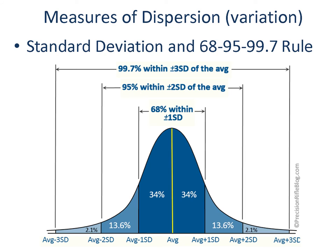Standard deviation is also useful because of the 68-95-99.7 rule. When the distribution of a variable is symmetric, 68% of observations fall within plus or minus one standard deviation, 95% are within two standard deviations, and 99.7% of observations are within three standard deviations.